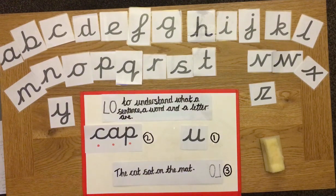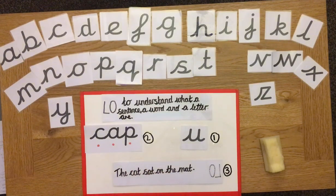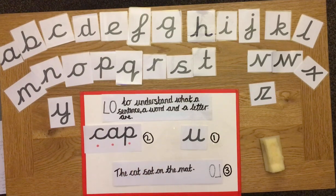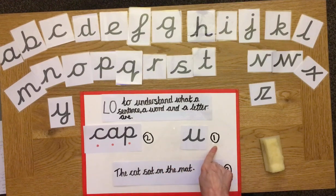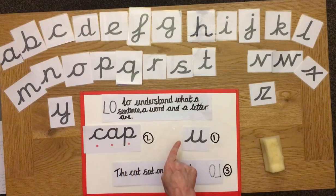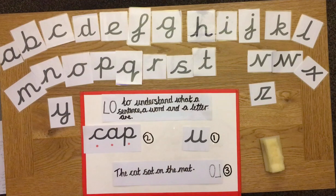Let's have a think. The first thing I asked you was: which one was a word? A word is number two. A word has letters in it. Then I asked you for a letter or a grapheme — that would be number one. A letter or grapheme is one on its own. In a word, we have letters. The last one is a sentence — number three. A sentence has words in it.